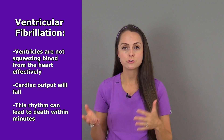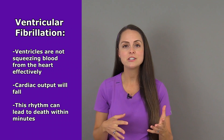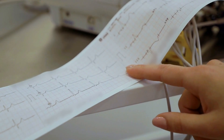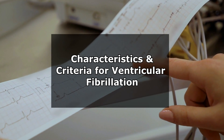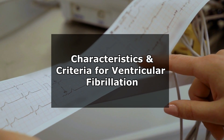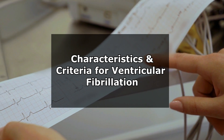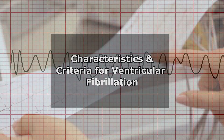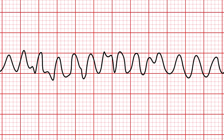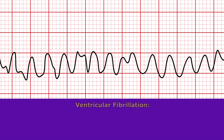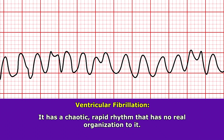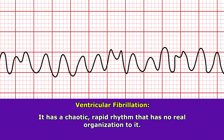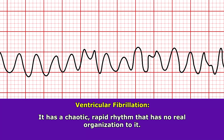And if it is not reversed or treated, the patient can die within minutes. So what are some characteristics and criteria that tell you that you have ventricular fibrillation? This rhythm is fairly easy to identify — it has a chaotic rapid rhythm that has no organization to it.